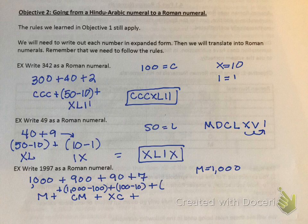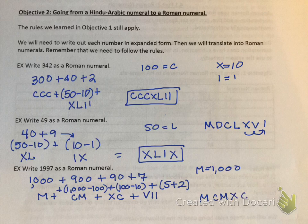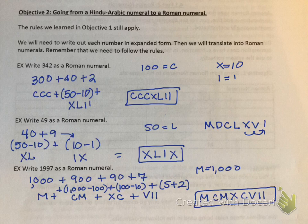Then I have to represent 7. 7 is actually 5 plus 2. Remember, we have that value of 5. So 5 is V, and 2 is II. So what do I get? I get MCMXCVII. And that is the answer.